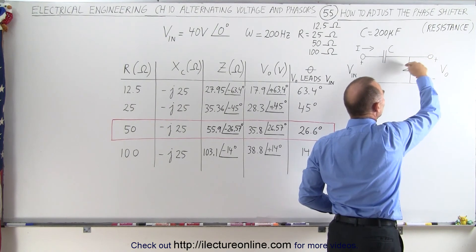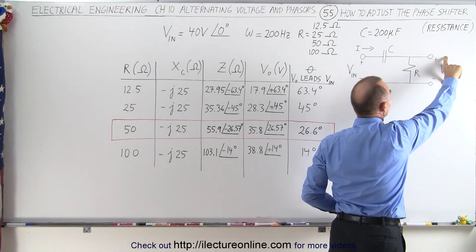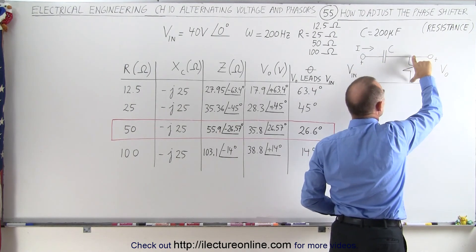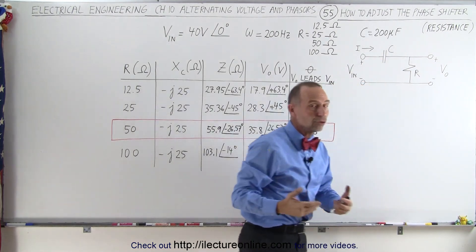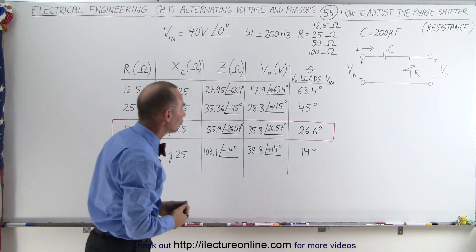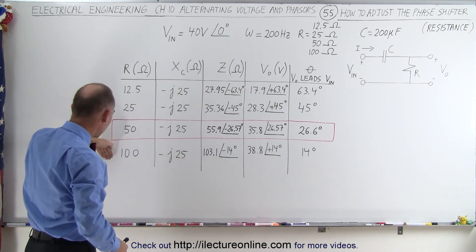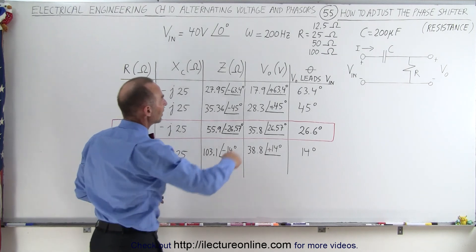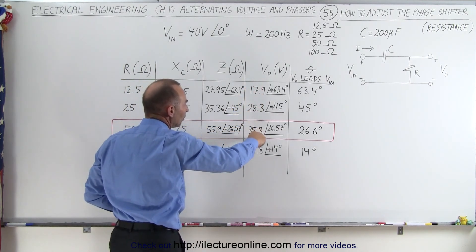So by increasing the resistor, you have a larger share of the input voltage being dropped across the resistor. So therefore, you should have a larger output voltage. And you can see as the resistance increases as we go down the table, you can see that the output voltage will increase as well.